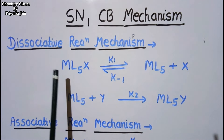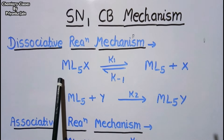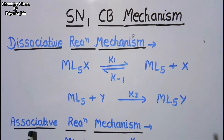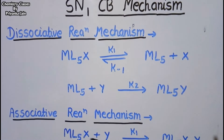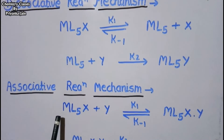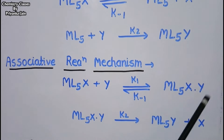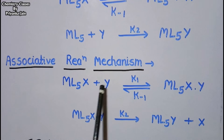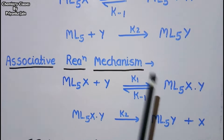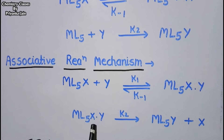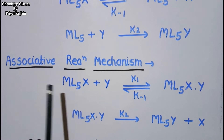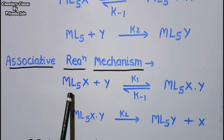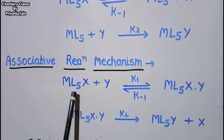In the dissociative mechanism, the rate of the reaction varies with the concentration of only one reactant species. In the associative reaction mechanism, the incoming nucleophile first attacks the complex and forms an associative complex — one in which both the migrating group and the incoming group are attached to the metal. In the next step, the migrating group leaves and the product forms. These reactions are generally second order because the rate depends on the concentration of two reactant species.